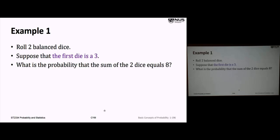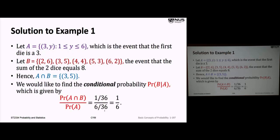Event B is the set of all (X1, X2) pairs where X1 plus X2 equals 8: (2,6), (3,5), (4,4), (5,3), (6,2). The intersection of A and B is just (3,5) — given I rolled a 3 first, I can only get a sum of 8 by rolling a 5 second. The probability of A and B is 1 over 36. The cardinality of A is 6, giving probability of A as 6 over 36. So the conditional probability of B given A is 1 over 6.